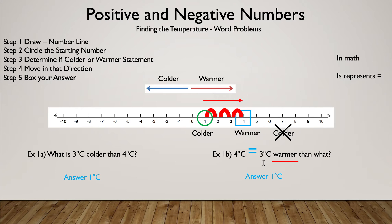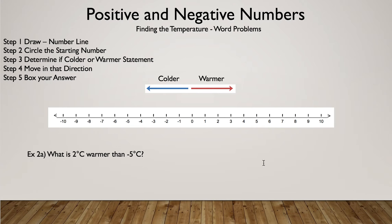Let's do the other cases just in case you would like to see that. So we have example 2a. What is two degrees warmer than negative five degrees Celsius? So since we are changing negative five degrees Celsius, that is my starting number. So we're going to go ahead and circle that. Then we're going to figure out if it's warmer or colder. It says warmer in the question. So we're going to go to the right. How many? Two times. So one and two. And then box my answer, negative three. And then you know it's negative three Celsius is the final answer.